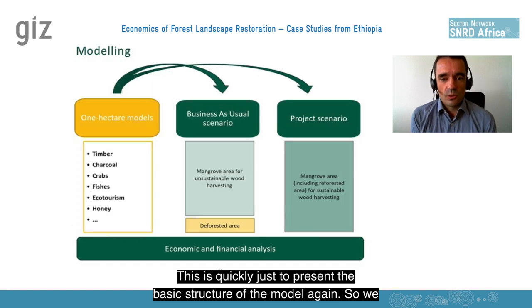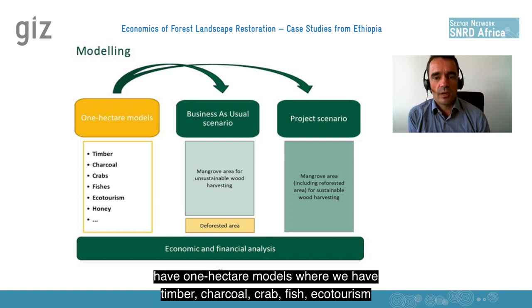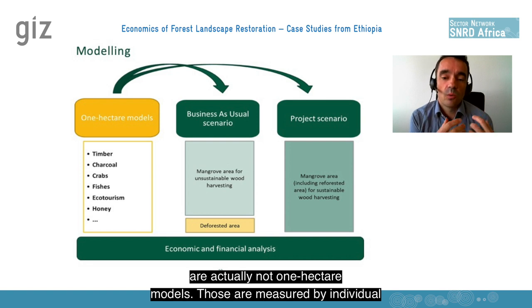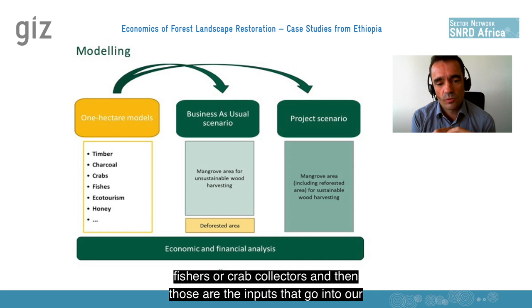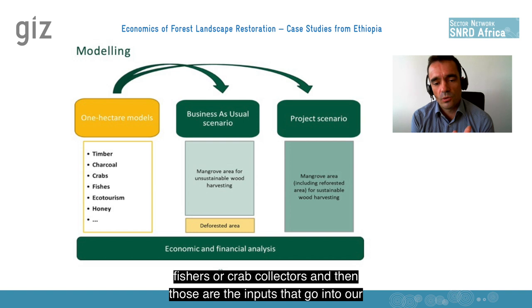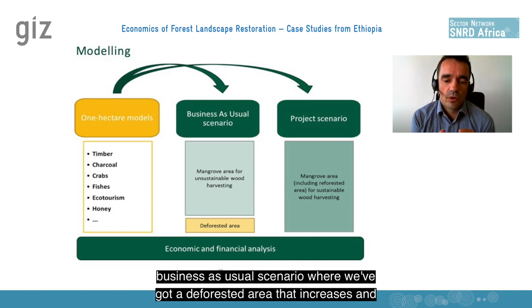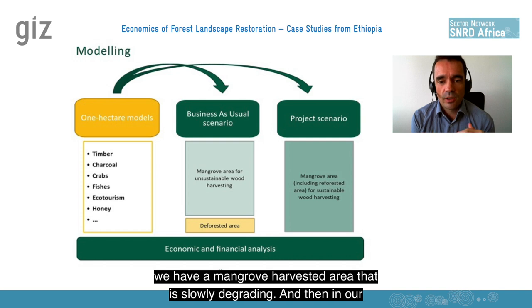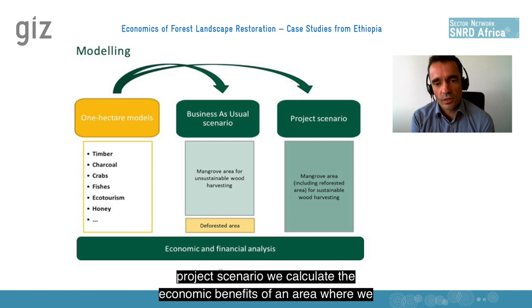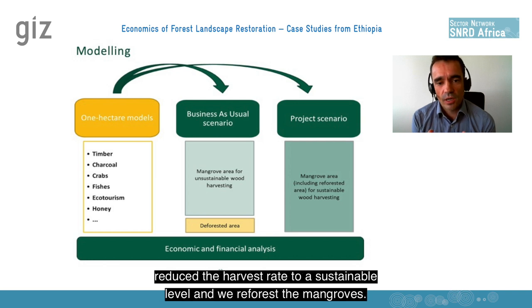To present the basic structure of the model: we have one-hectare models for timber and charcoal, while crab, fish, and ecotourism are measured by individual fishers or crab collectors. These are the inputs that go into our business-as-usual scenario, where we have a deforested area that increases and a mangrove harvested area that is slowly degrading. In the project scenario, we calculate the economic benefits of reducing the harvest rate to a sustainable level and reforesting the mangroves.